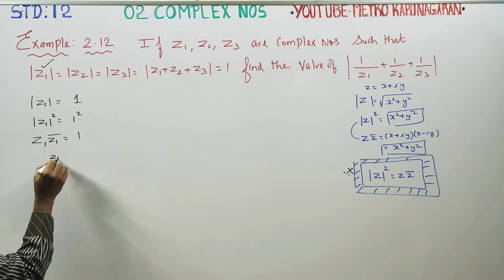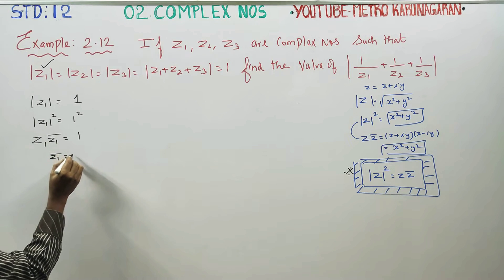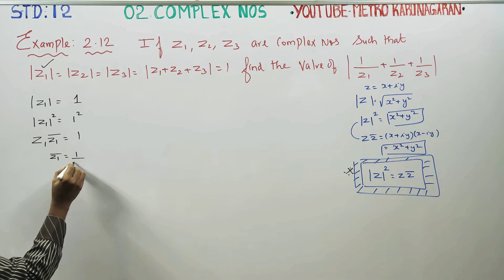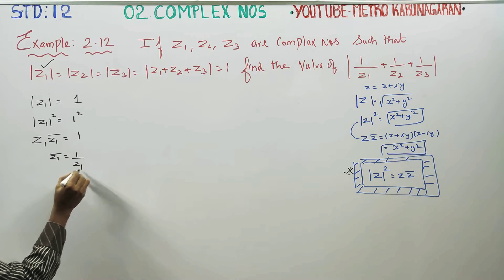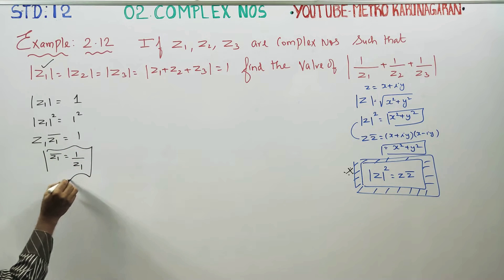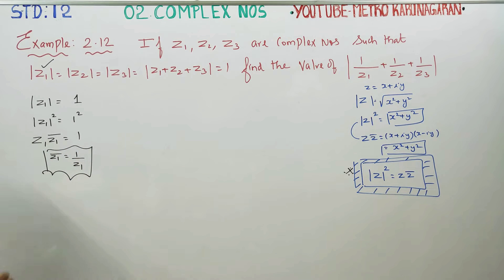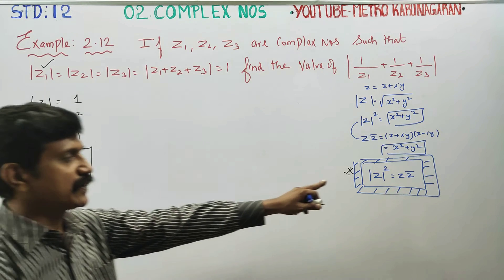What is my Z1-conjugate? Z1-conjugate is equal to 1 by Z1. This is the first result from the property.